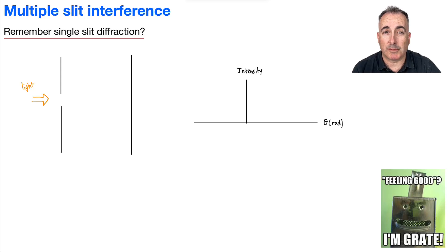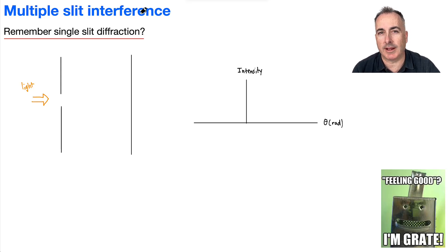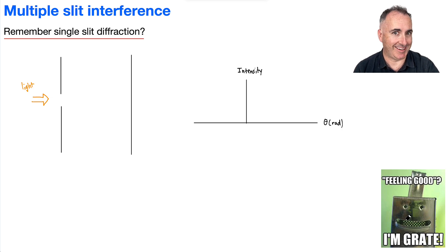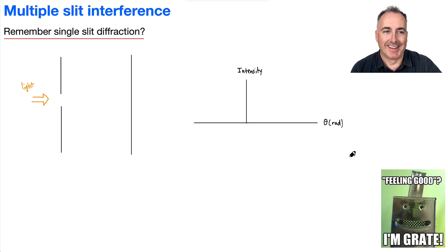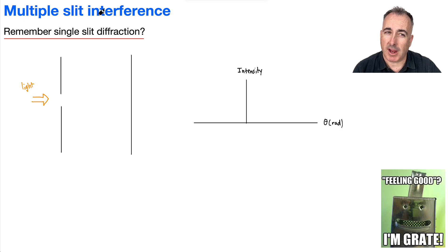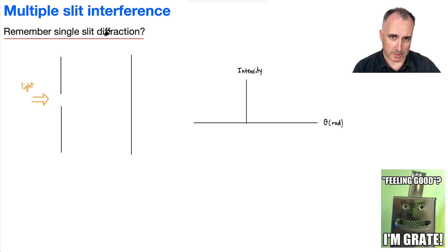We're going to be learning about multiple slit interference and what are called diffraction gratings. Before we can talk about multiple slit interference, I just want to remind you again about single slit diffraction, because it's going to be important — we're going to compare them.